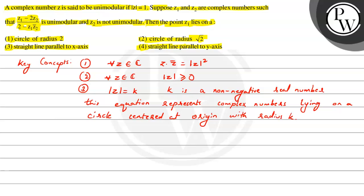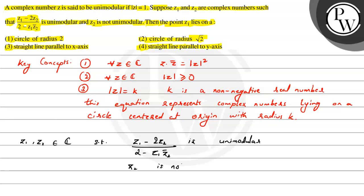This equation represents complex numbers lying on a circle centered at origin with radius k. In the question we are given that the complex number z is unimodular if mod of z is equal to 1. We have z1 and z2 in the set of complex numbers such that z1 minus twice of z2 divided by 2 minus z1 times z2 conjugate is unimodular, and z2 is not unimodular. We have to find where z1 lies. With these given statements and key concepts, let's now start with our solution.